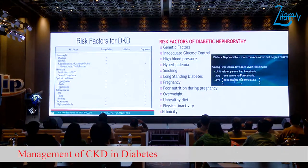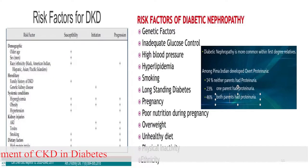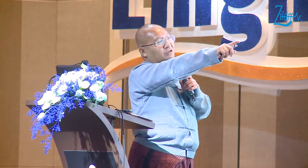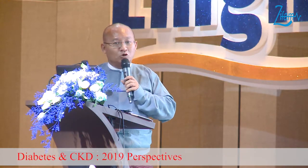Risk factors for DKD include genetic factors, poor glycemic control, high blood pressure, dyslipidemia, smoking, long-standing diabetes, pregnancy, poor nutrition, overweight, unhealthy diet, and physical inactivity. Family history is critically important: if neither parent has proteinuria, there is still a 40% chance of DKD. If one parent has proteinuria, the risk is 23%, and if both parents have proteinuria, the chance rises to 45%.